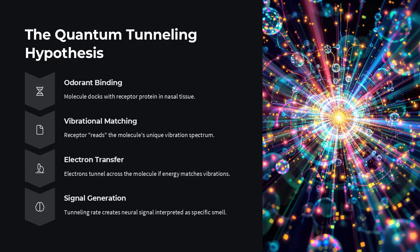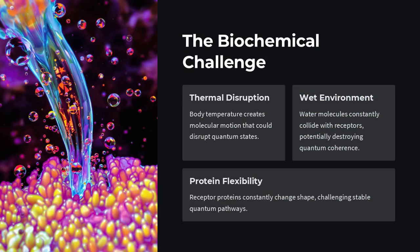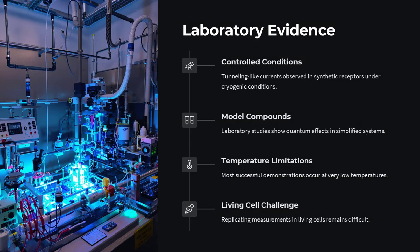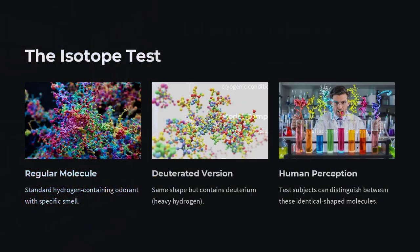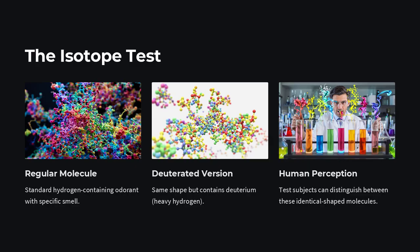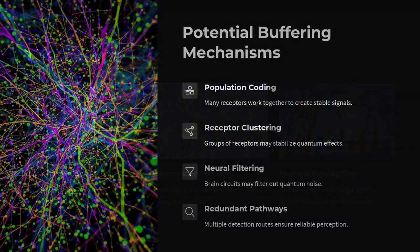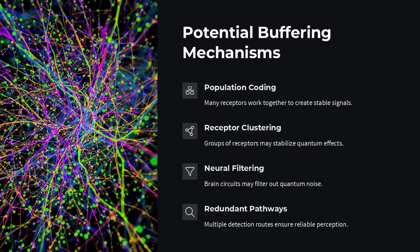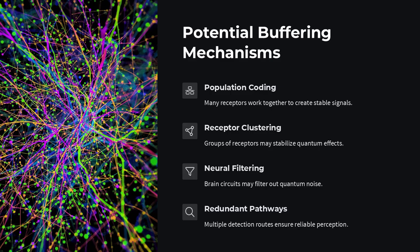The idea, known as the vibrational or quantum tunneling theory of olfaction, posits that when an odorant binds to its receptor, electrons in the receptor protein tunnel across the molecule, and the rate of that tunneling depends on the vibrational frequency of the odorant's chemical bonds. In effect, receptors would read a molecule's unique vibration spectrum rather than merely its shape, opening a new paradigm for how smell perception might exploit quantum effects. So far, until we probe the biochemical reality at the receptor site.